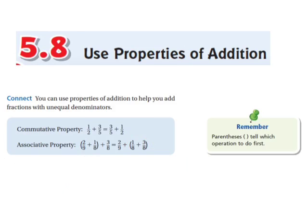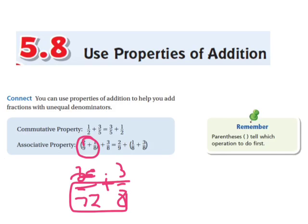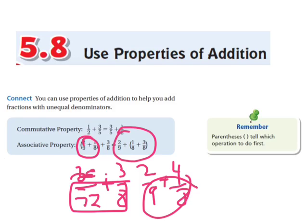Now, later on, once I found out what this is, something over 72 plus three eighths, then I'd have to find a common denominator again. Here, I would have two ninths plus four eighths, and I'd have to find a common denominator. But here, I only have to do it once.